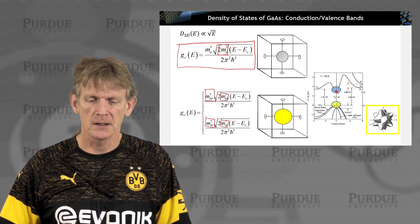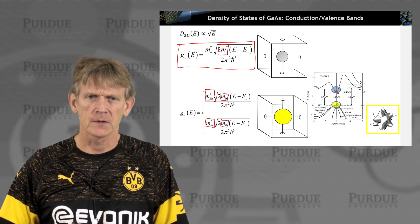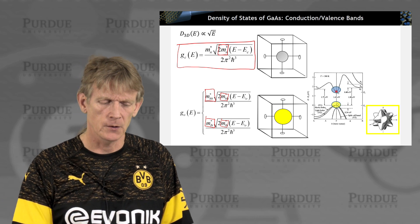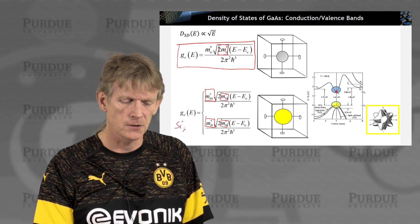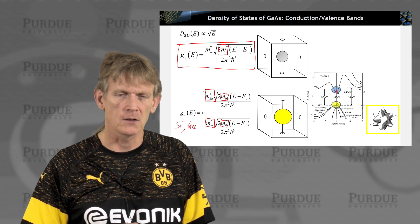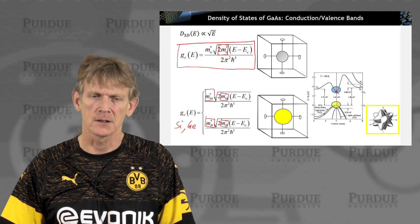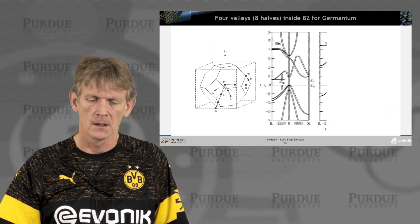So that's gallium arsenide or materials that are at the gamma point. And again, for silicon and for germanium, we would do the same here for the valence bands as well, not just gallium arsenide.